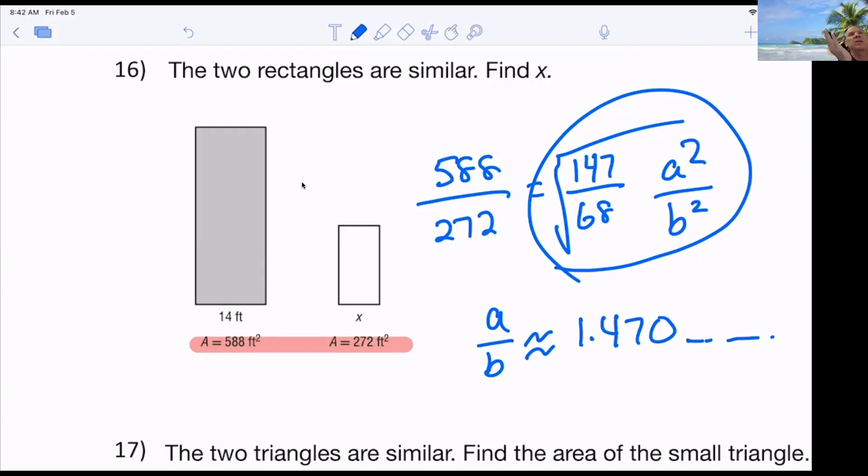That means that the larger rectangle is 1.47 times greater than the smaller one. Now, once again, I say this every single year. I don't think that's that difficult. Now, you look at it. Am I going from the large to the small or small to the large? Large to small. So it has to get what? You have to get smaller. So I would have to what? You have to divide.